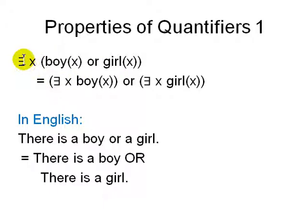The first one we see is there exists x, x is a boy or x is a girl, is the same as there exists x, x is a boy, or there exists x, x is a girl.